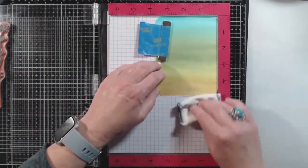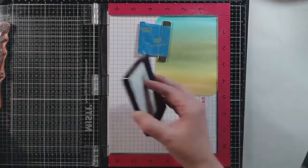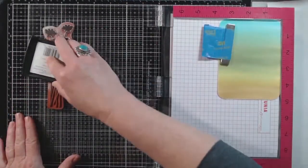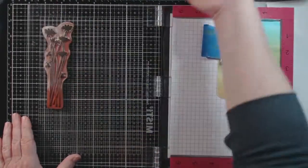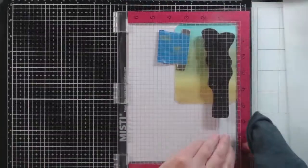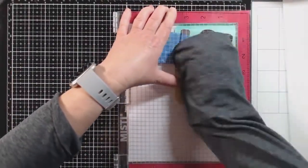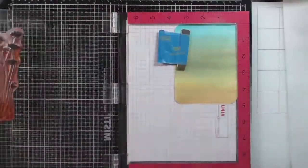I'm using my anti-static tool to make sure that I don't get little bits of black embossing powder where I don't want it. That's the problem with black embossing powder, it can really show if you get it in places that you don't want it.